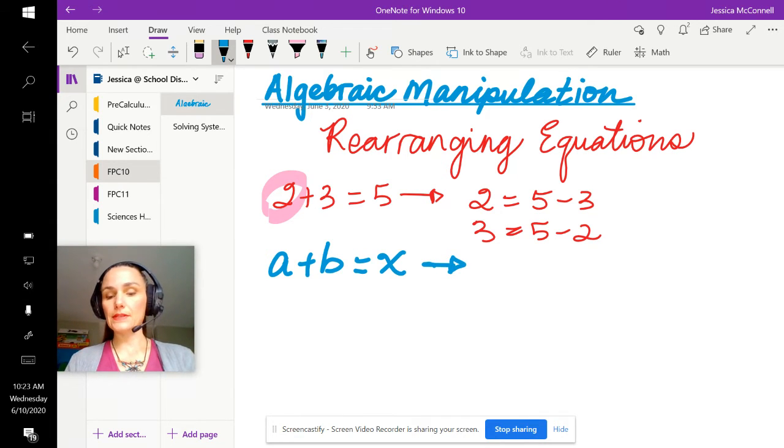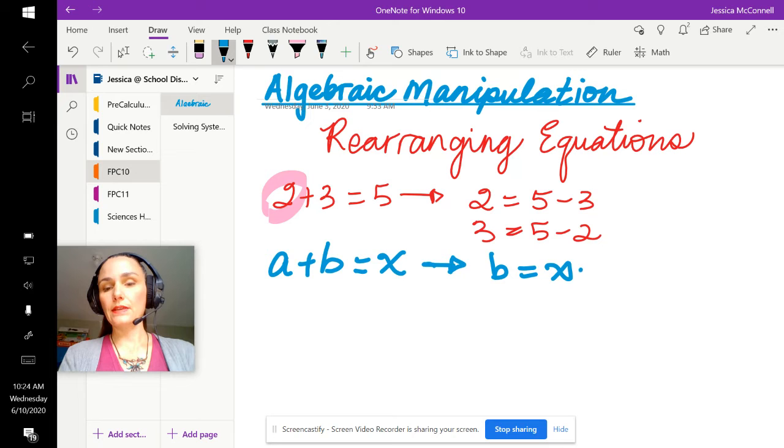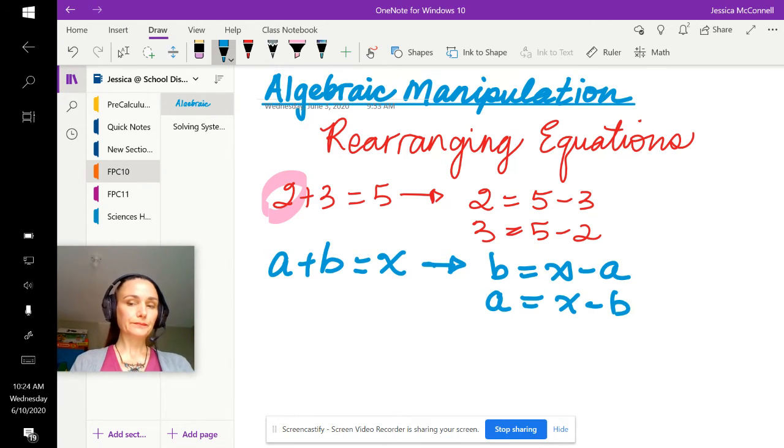From there I can write two other statements that are true. I can isolate for b by subtracting a, so I could say that b is x minus a. And I could also isolate for a by subtracting b from x. So that's two different equivalent equations or true statements that come from the original equation that I was given.